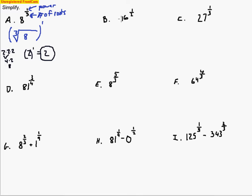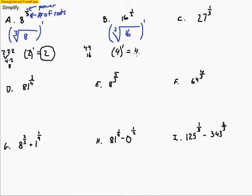Looking at the next one — same sort of thing. The numerator tells us the power, the denominator tells us the number of roots. We're looking for two numbers that multiply to make 16, then raising to the first power. It's an even number, so try even numbers. 4 times 4 makes 16, so the two numbers that multiply to make 16 — that number is just 4. And 4 to the first power is 4.